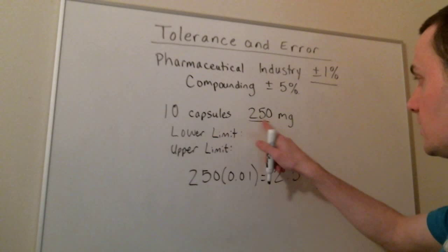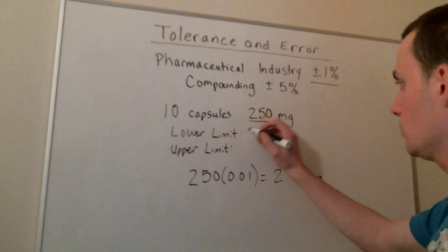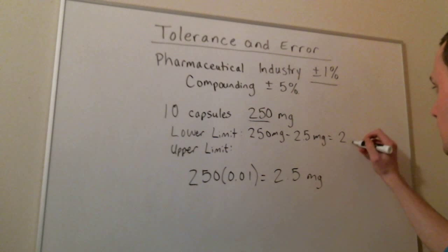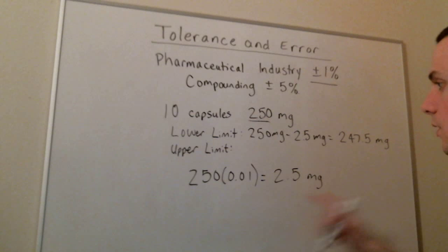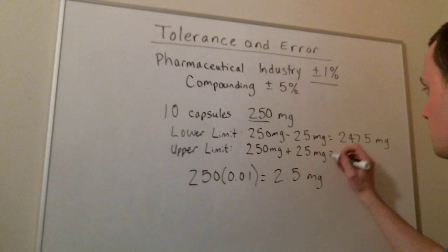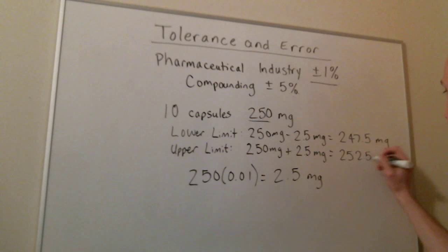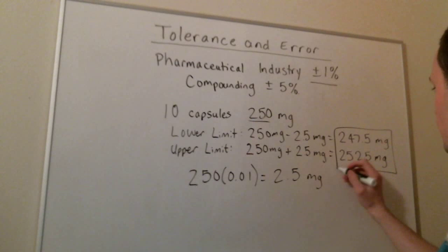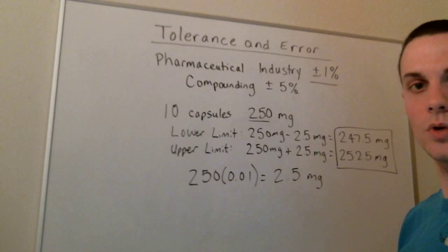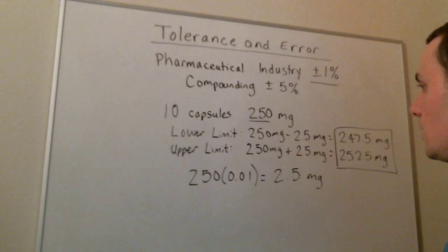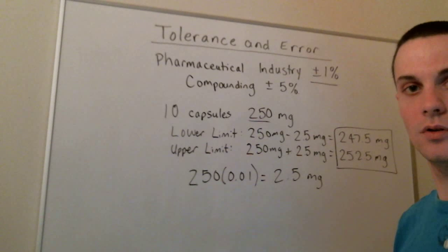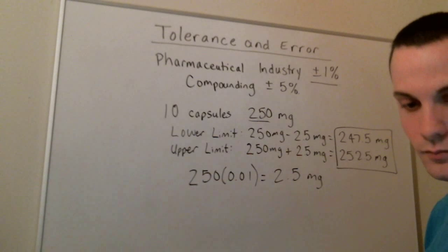We just add and subtract 2.5 milligrams from 250. So 250 milligrams minus 2.5 milligrams is 247.5 milligrams. And our upper limit is 250 milligrams plus 2.5 milligrams, which equals 252.5 milligrams. So our lower limit is 247.5 and our upper limit is 252.5 milligrams. If a powder weight falls between these limits, the capsule is acceptable for manufacturing.